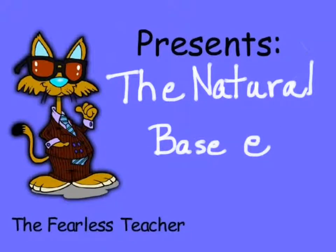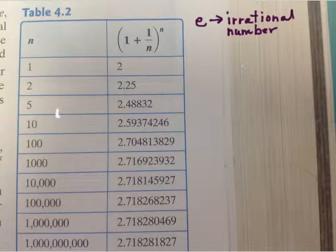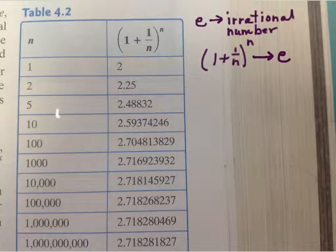Next we're going to move on to the natural base e. What you're looking at right now is a picture of a chart where we're getting close to e. We are approximating the value of e. E is an irrational number, and it is found by taking 1 plus 1 over n and raising that to the n power. And as n gets larger and larger, it approaches the value of e.